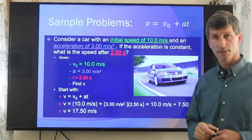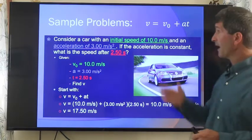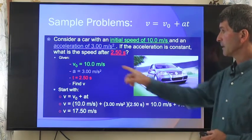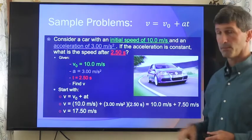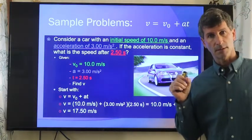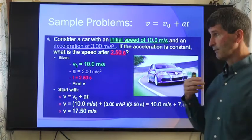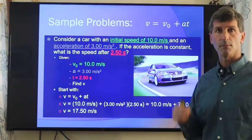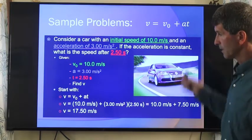We need to identify an equation that has all of these three givens, plus what we're trying to find. Of the four equations, this is the equation that works. In fact, this equation doesn't even have to be manipulated. I plug in v₀, I plug in the acceleration, I plug in time. So very important. Identify what you're given. Identify what you're trying to find. Find an equation with all those variables in it.